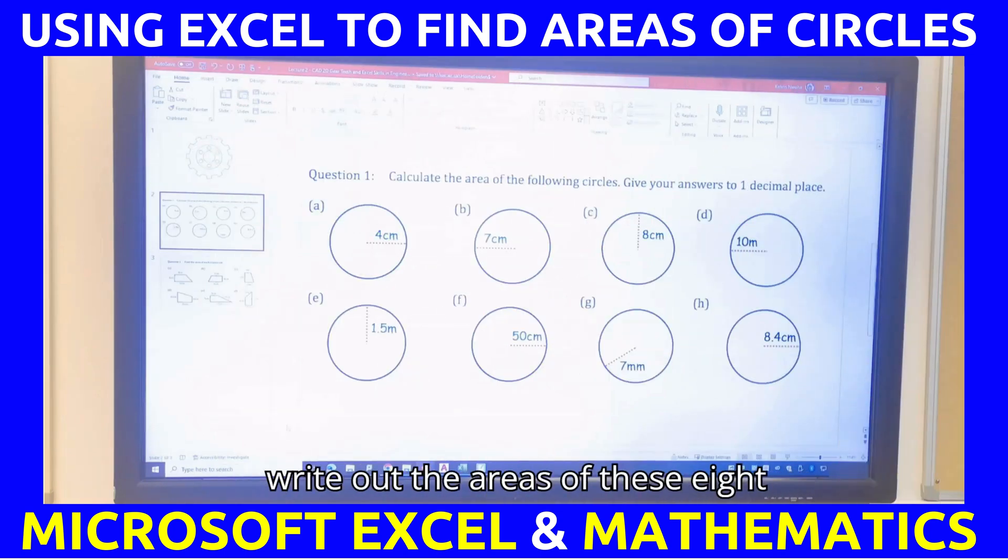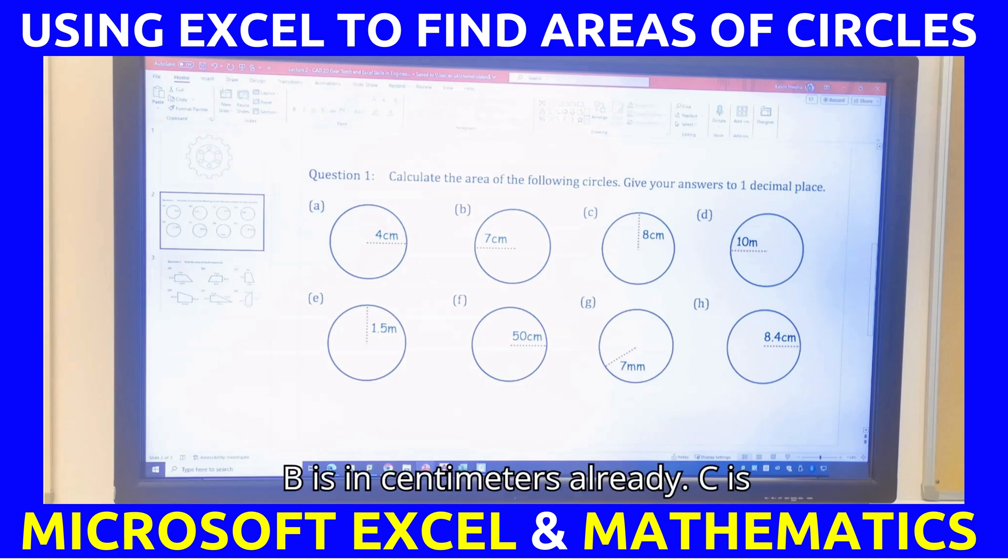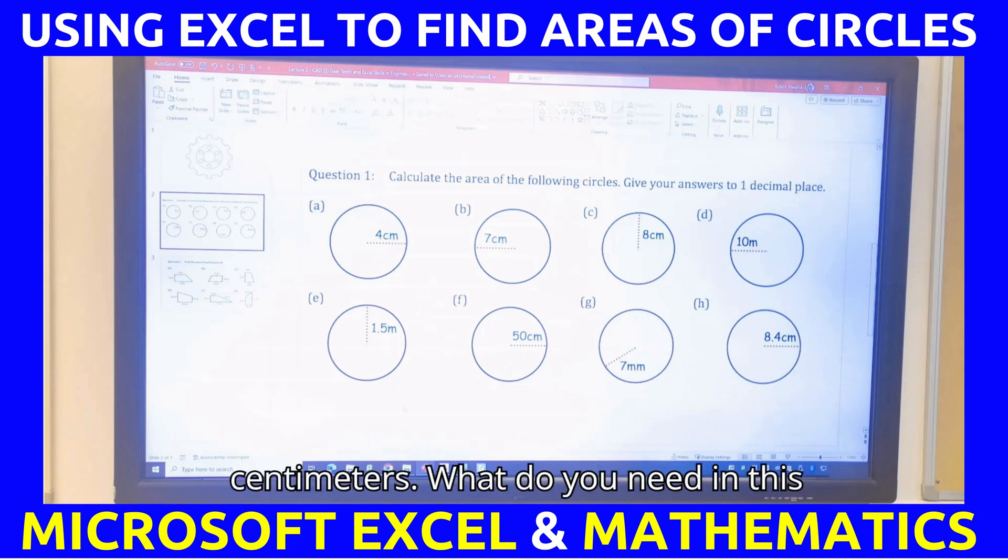We have done this by learning how to use this. Everybody on your paper, I want you to write out the areas of these 8 circles in centimeters. You're converting the E, 1.5, and you're converting G, 7 millimeters. You're converting D, which is 10 meters. So, you have 3 conversions. Convert everything to centimeters. A is in centimeters already. B is in centimeters already. C is in centimeters already. D is in meters. Convert it to centimeters. E is in meters. Convert it to centimeters. F is already in centimeters. G is in millimeters. Convert it to centimeters. H is already in centimeters.